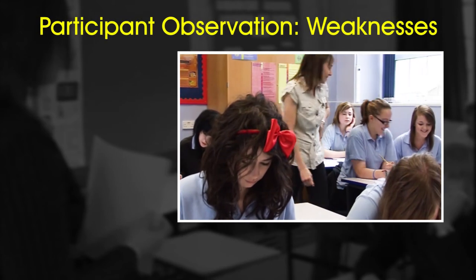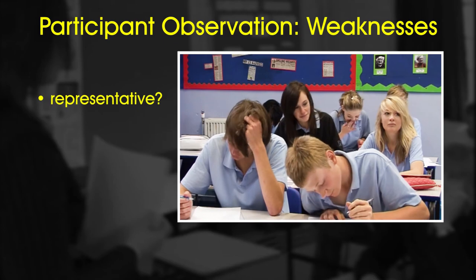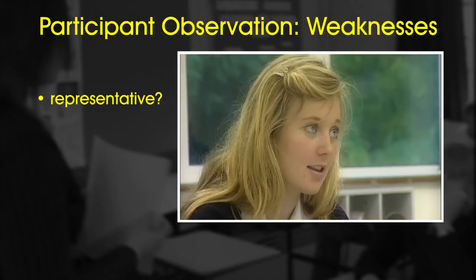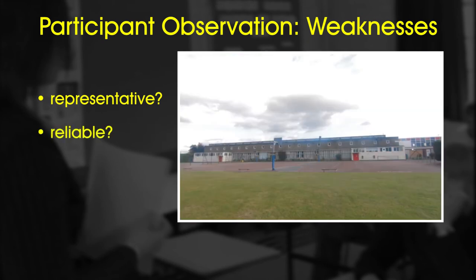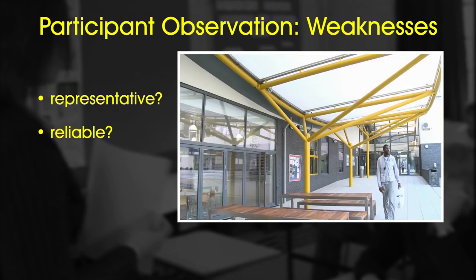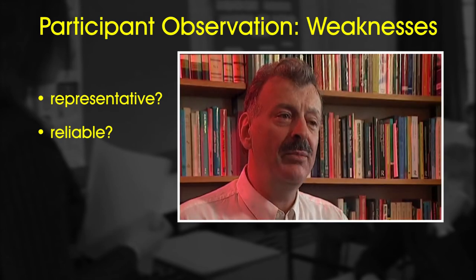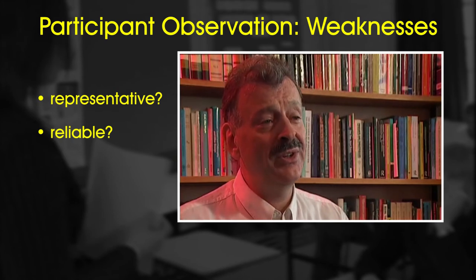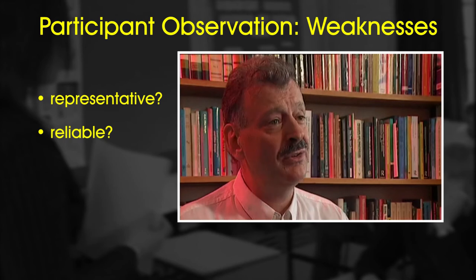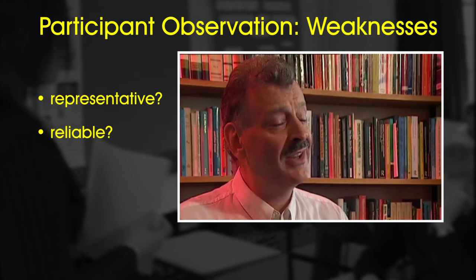As participant observation studies are based on small groups of participants, the data may not be representative, and this can limit generalisation. For example, Willis' study only looked at working class British boys. So do his findings apply to students from other countries, from other ethnic backgrounds, or to girls? Whilst Willis' research didn't answer these questions, it did provide a model which could and has been applied to other social groups. Another critique is that participant observation may lack reliability – it's hard, if not impossible, to test and replicate findings. As Willis himself accepts: 'It is very difficult to prove that an ethnographic method repeated time and again would replicate results time and again.'